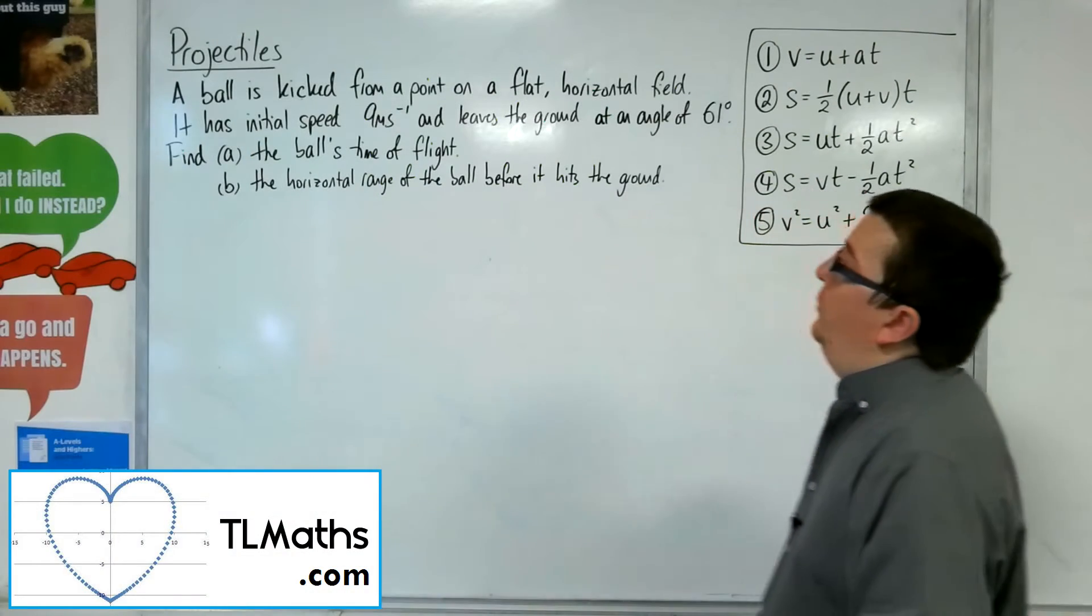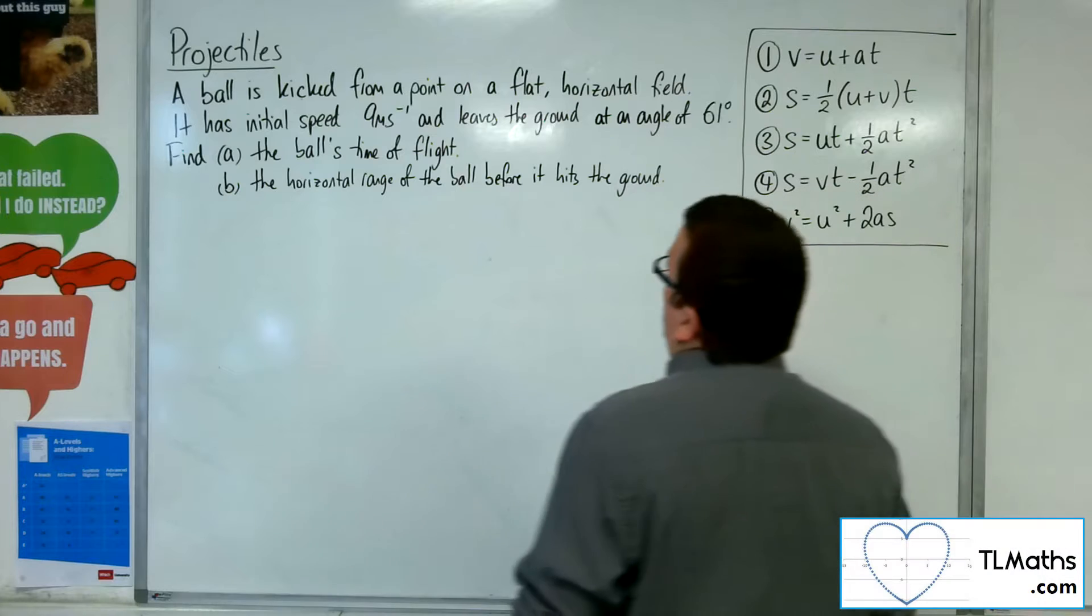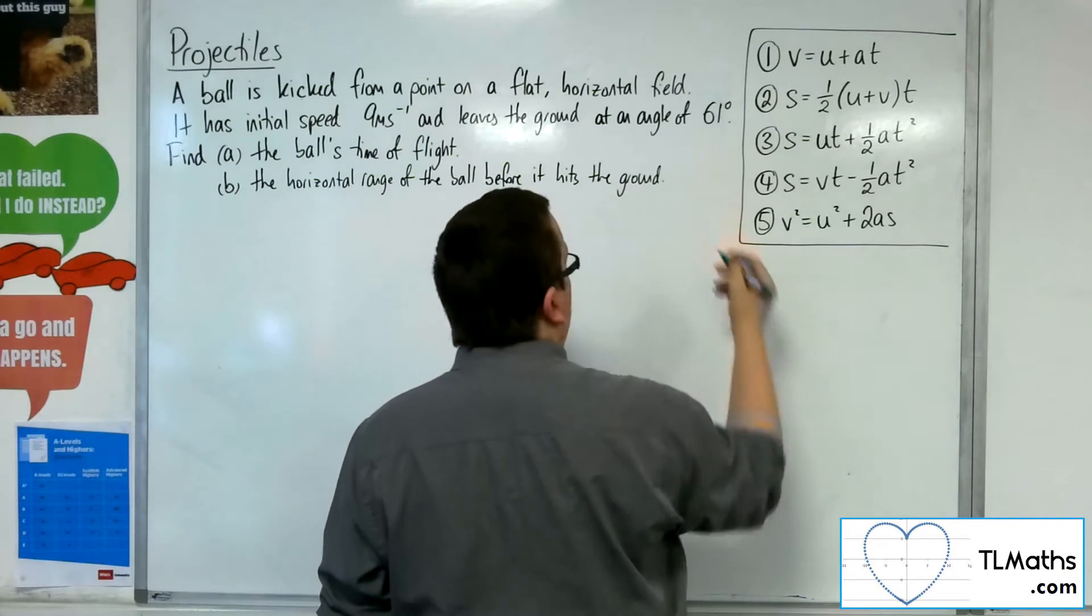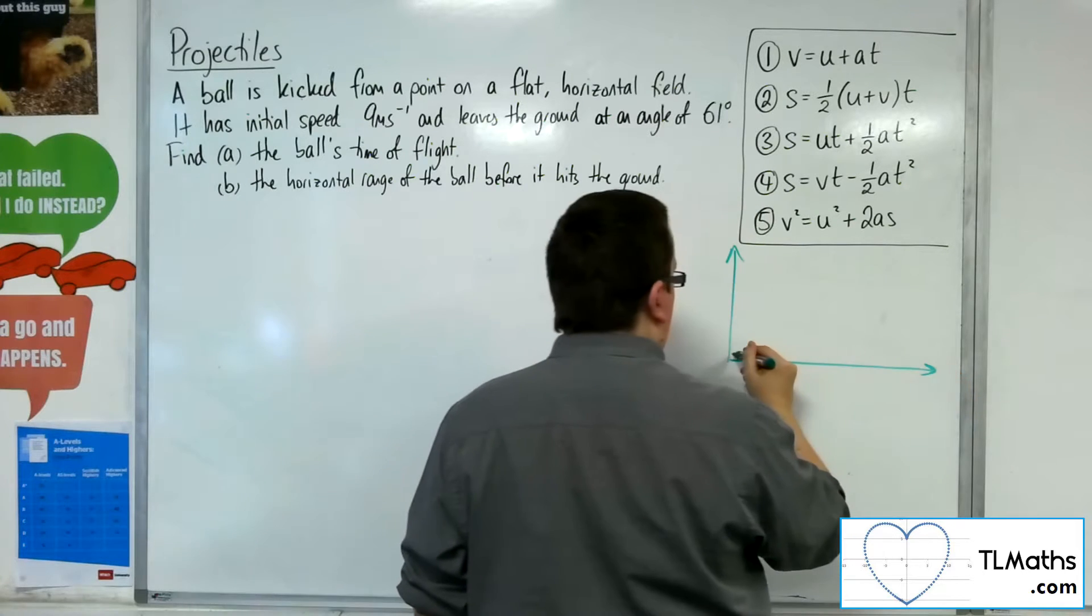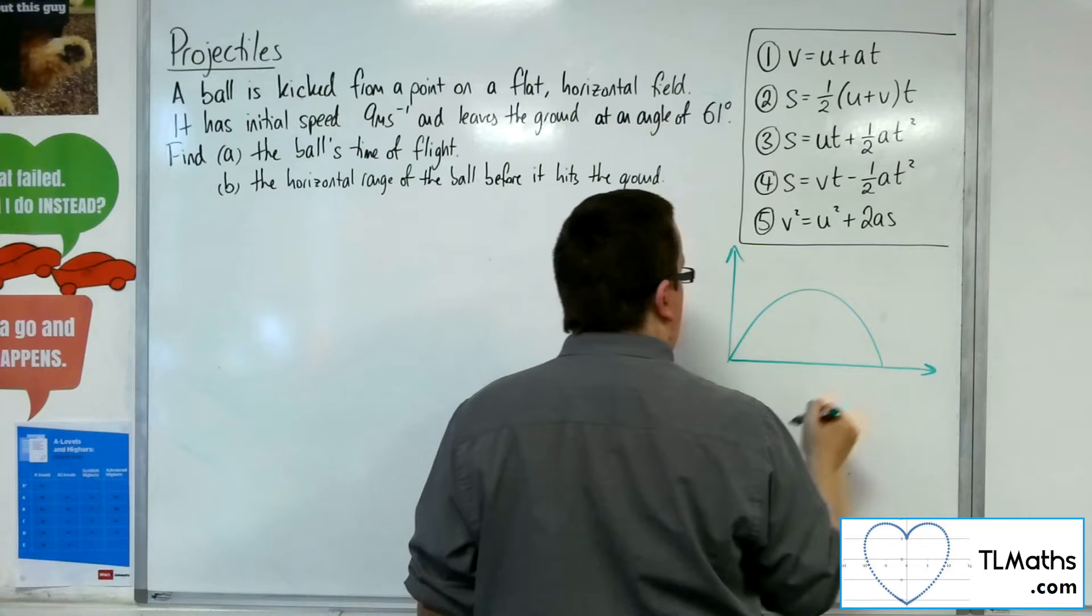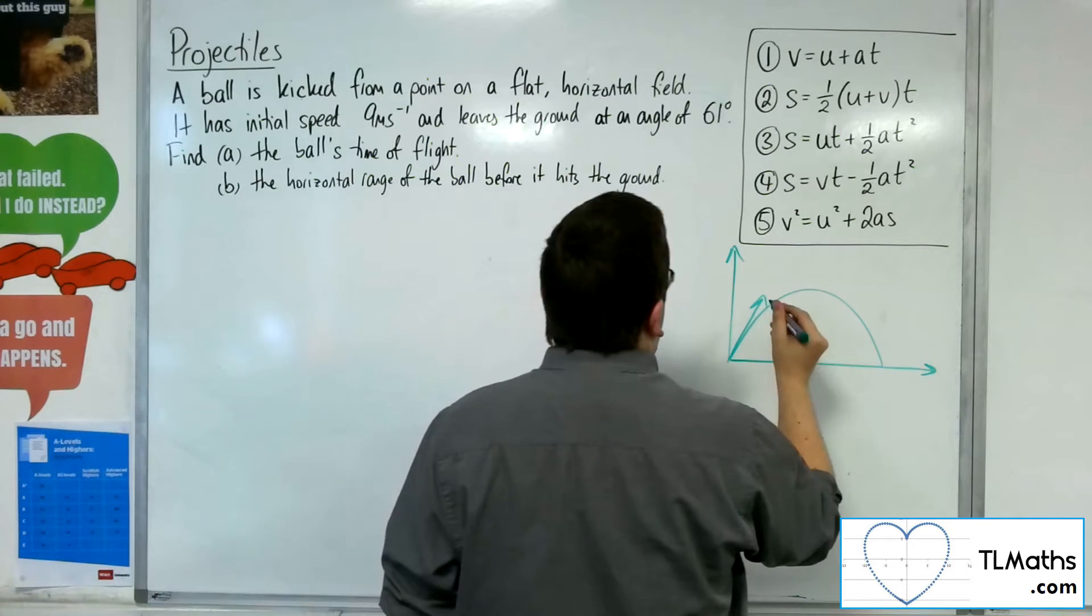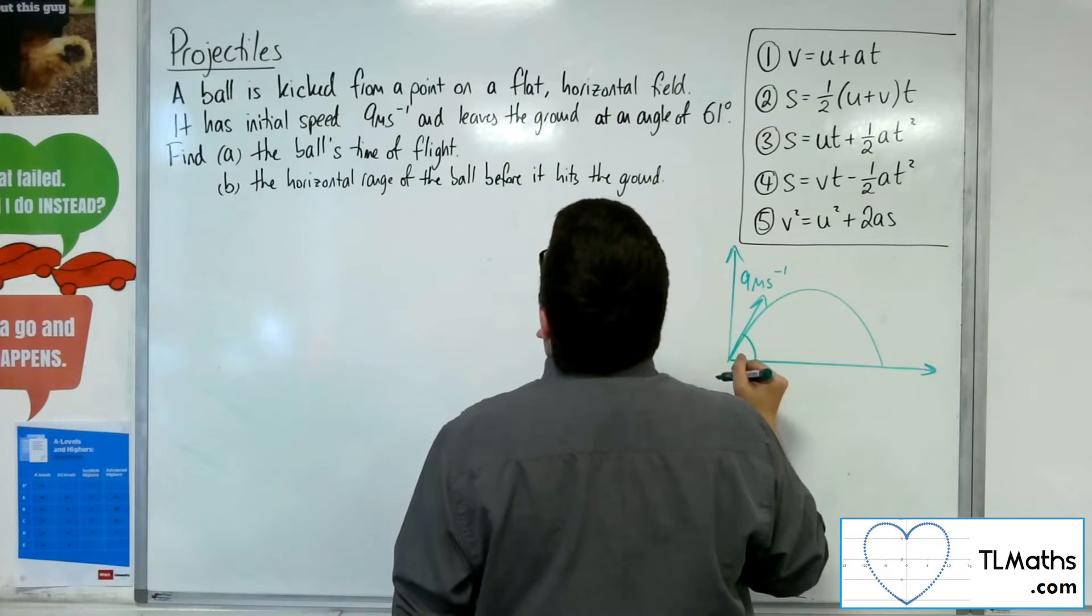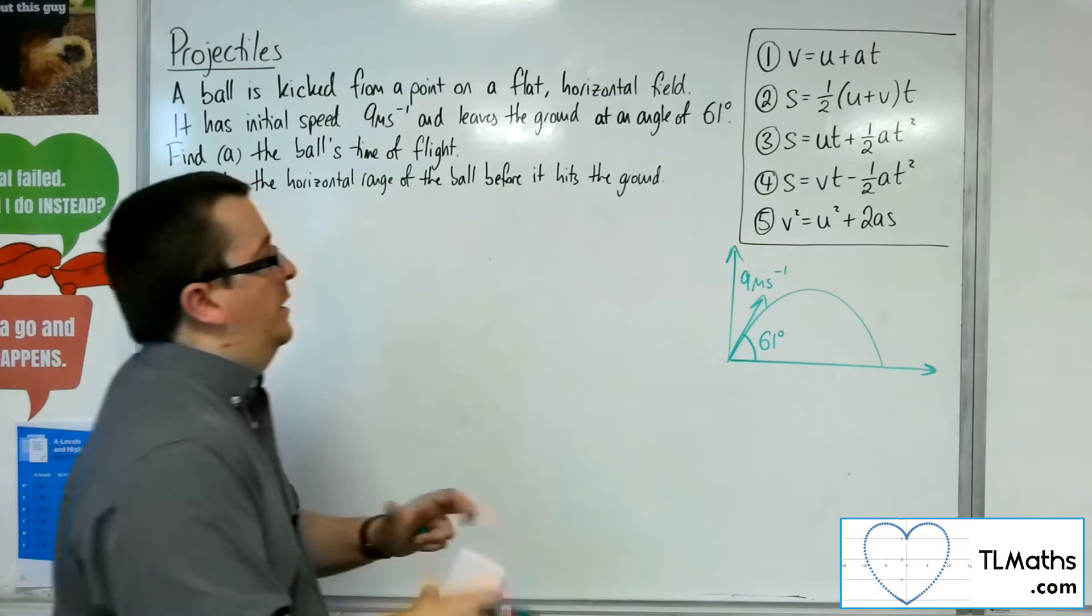In this problem, a ball is kicked from a point on a flat horizontal field. It has initial speed 9 metres per second and leaves the ground at an angle of 61 degrees. So visually, this is what's going on. Here's the ball flying through the air, hits the ground. Now it's got an initial speed of 9 metres per second and at an angle of 61 degrees to the horizontal.